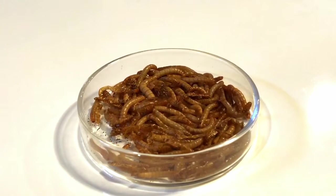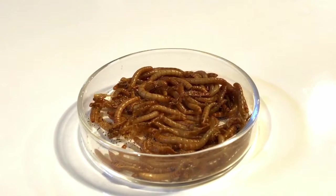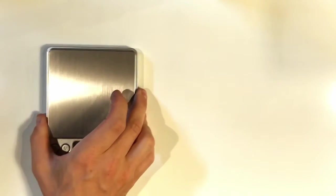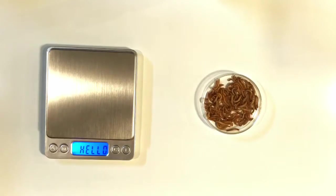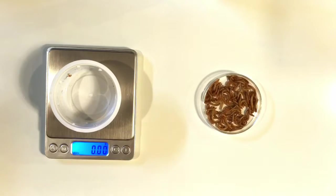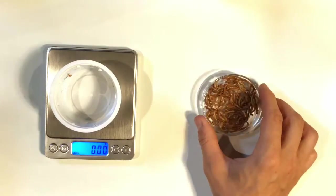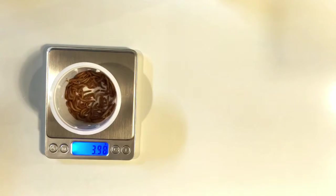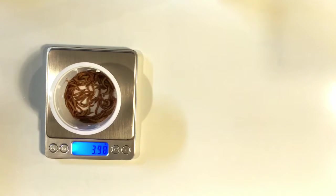Now we can't do this investigation with just one worm. We really need a big pile of them. So here we have about a hundred mealworms. So let's use our scale to record their starting mass. First, we can eliminate the mass of our container using the tare function. And we see that the starting mass of our worms is 3.98 grams.